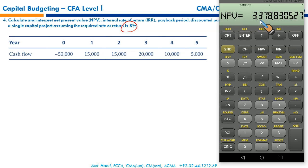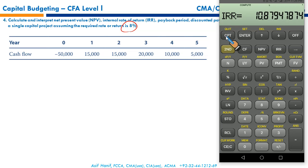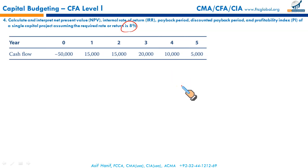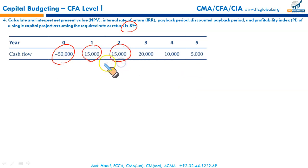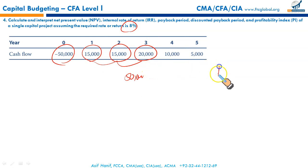The NPV is $3,378. If you press IRR and CPT, the IRR is 10.879%. Your calculator will do the computation — just plug in the numbers. For simple payback: you have negative $50,000 to recover. You recover $15,000 in year 1, $15,000 in year 2 — total $30,000 — and $20,000 in year 3 — total $50,000. So your conventional payback period is 3 years.